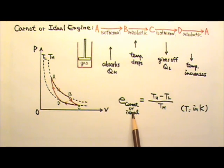The Carnot or ideal efficiency can be found using this expression: TH minus TL divided by TH, where both the temperatures have to be in Kelvins. We're not going to derive this expression in this course, but you should know this result and know how to use it.